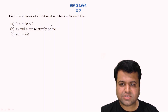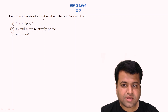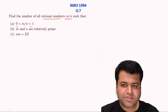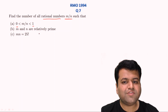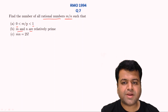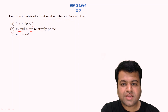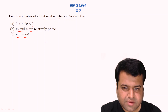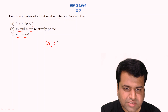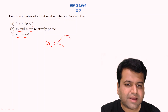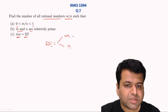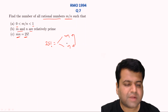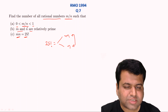Let's start the solution. The question says we need to find all rational numbers of the form m/n such that m/n lies between 0 and 1, m and n are relatively prime to each other — that is, the numerator and denominator do not have any common factor — and the product m × n equals 25 factorial. So we need to break 25 factorial into two parts, m and n, such that their product is 25 factorial, they are co-prime, and m/n is less than 1.